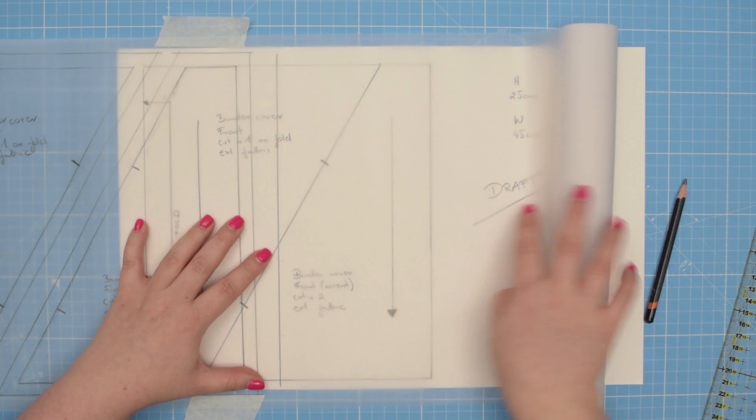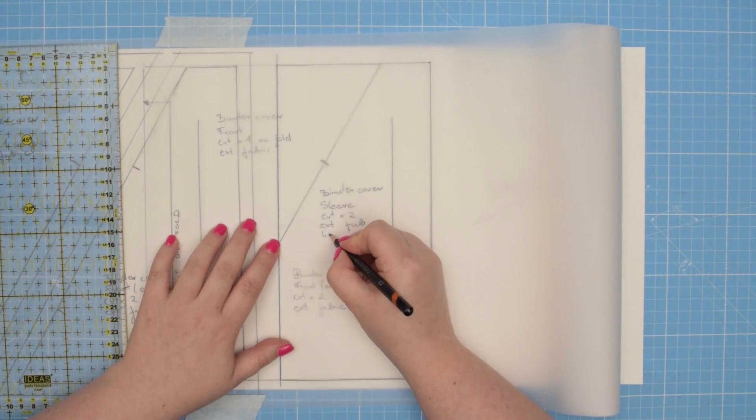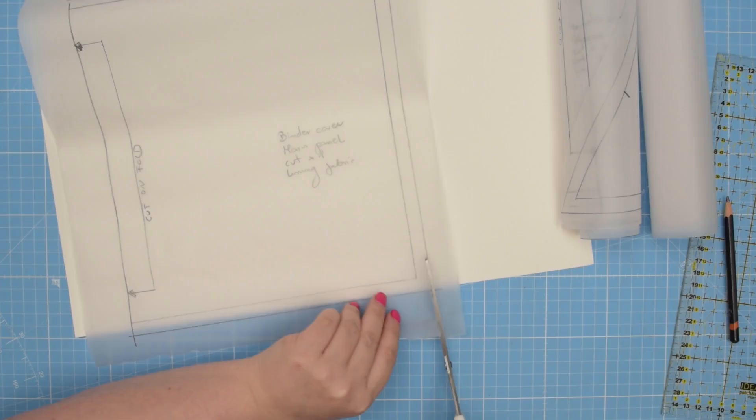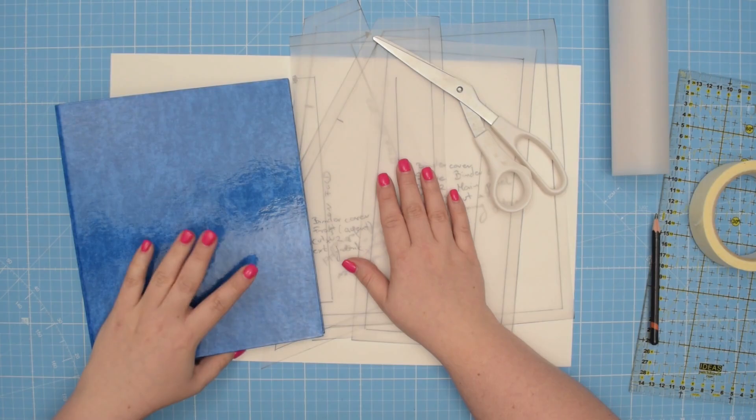And lastly, you're going to trace the sleeve pattern piece and label your pattern. This is sleeve. We need to cut it two times from external fabric and then two times from lining fabric. And as always, add one centimeter seam allowance. Once you traced all your pattern pieces, then you can cut them out.